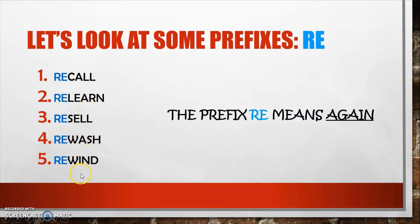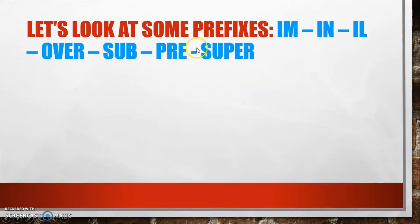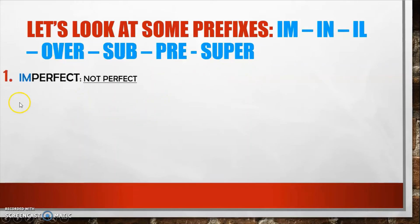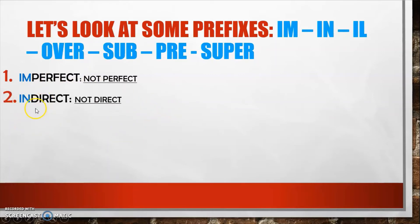Here are some more prefixes: 'im,' 'in,' 'il,' 'over,' 'sub,' 'pre,' and 'super.' Remember, super is a prefix we attach to the beginning of words. Let's look at some examples. 'Imperfect' — 'im' here means 'not,' so imperfect means not perfect. 'Indirect' — 'in' also means 'not,' so indirect means not direct. 'Incorrect' means not correct.